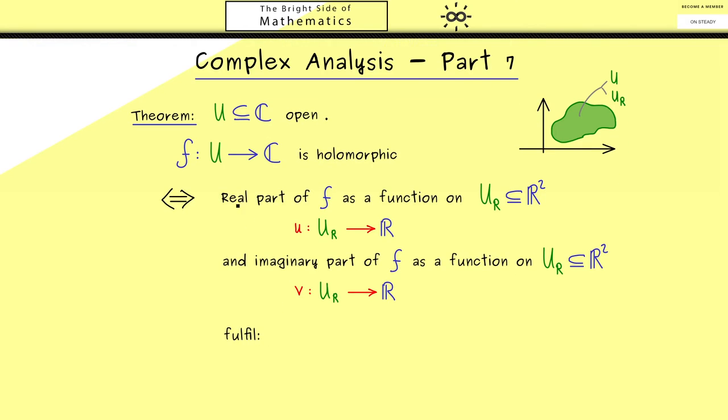Indeed, the property that F is holomorphic translates into the fact that u and v fulfill the Cauchy-Riemann equations. These are not complicated at all; they are just two partial differential equations. The first one simply says that ∂u/∂x equals ∂v/∂y. And then in the second equation, you see when you switch the roles there is a minus sign included: ∂u/∂y equals -∂v/∂x. In summary, what we need for a holomorphic function is that these two equations are fulfilled at each point in the set U_ℝ.